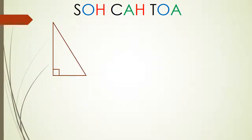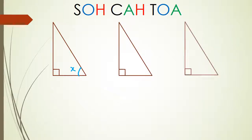Here's our first question. We have a missing angle, and I'm going to put down all three question types so you can see the three different types of questions. There's the missing angle - I'm going to have sides of 5 and 4 in the first triangle, 5 and 3 in the second, and 4 and 2 in the third.